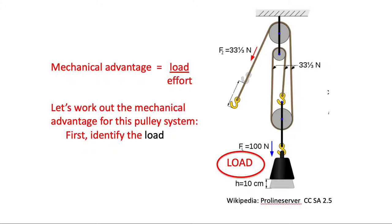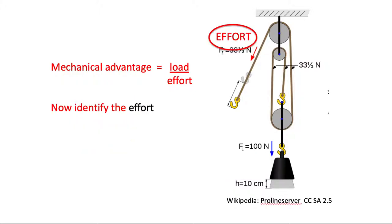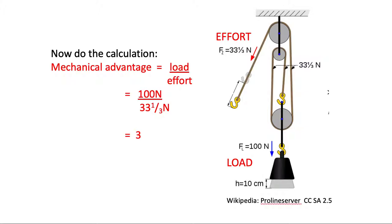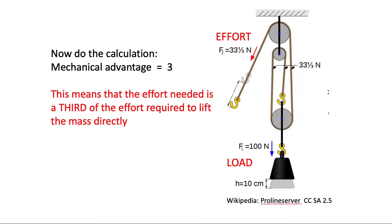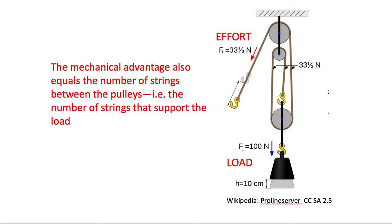So here's the load on the diagram. Identify the effort and the magnitude of each. So you're going to put load over effort, 100 over 33 and one-third newtons for both, and so the mechanical advantage is three. So the effort required is a third that of lifting the mass directly.